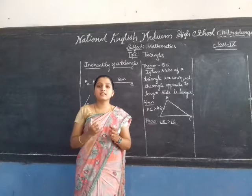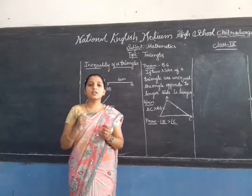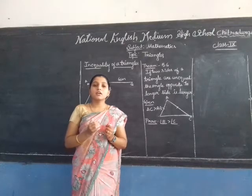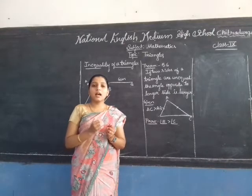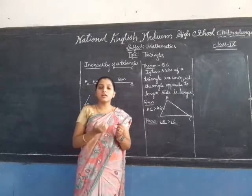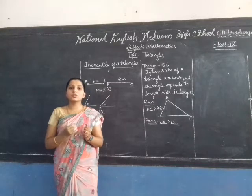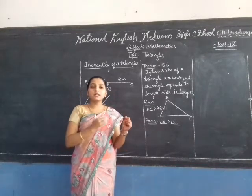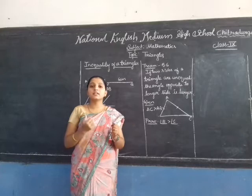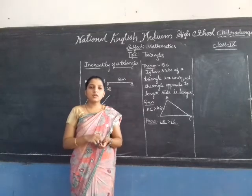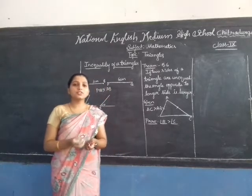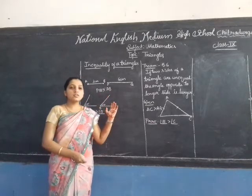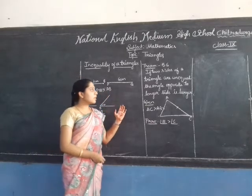If you consider polygons and triangles, no two triangles are equal to one another. All triangles are different because they have different sides and different angles. In today's class, we are going to discuss how inequalities arise in a triangle. So let's prove some theorems.